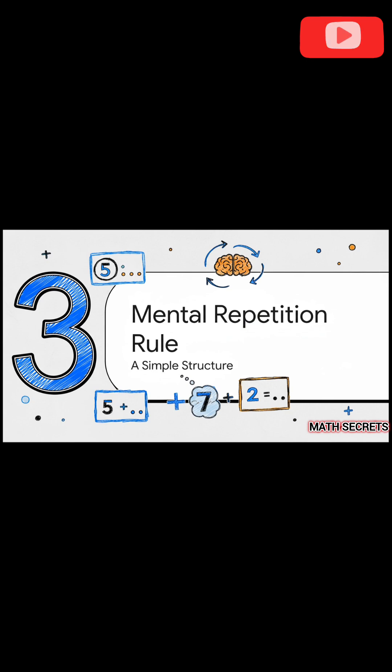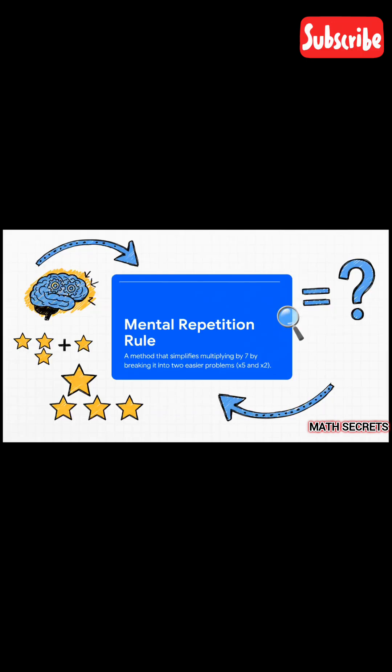Now, to make this sound a little more official, let's give this idea a name. We're going to call it the mental repetition rule. The rule is really just a formal way of saying you take one tough multiplication problem—anything times seven—and you split it into two really easy ones. Then you just add the results together.